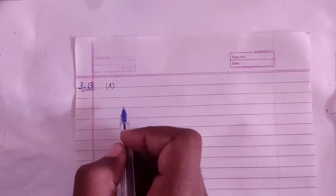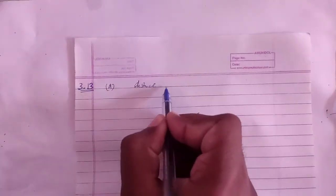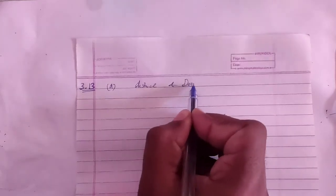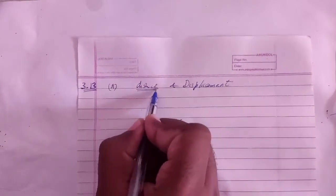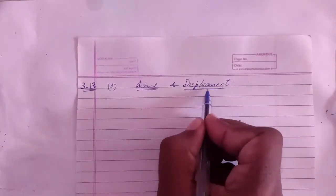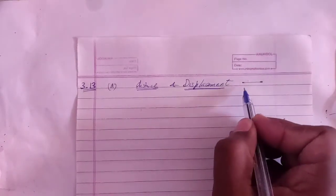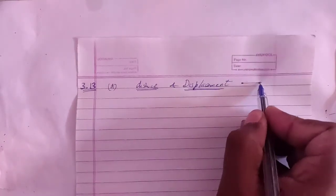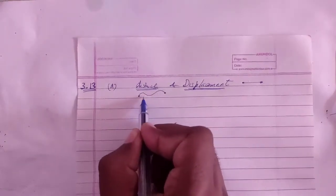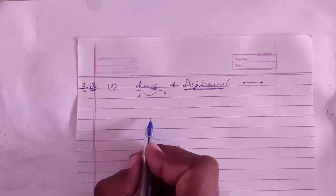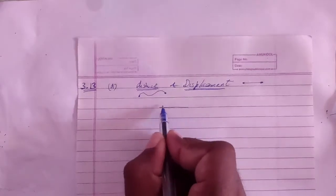For one-dimensional motion, let us first talk about distance and displacement. Distance is the path length covered by a particle. Displacement is the minimum distance between two points, that is, the straight-line distance between two points. So distance refers to the total path length, while displacement is the straight-line separation between the start and end points.